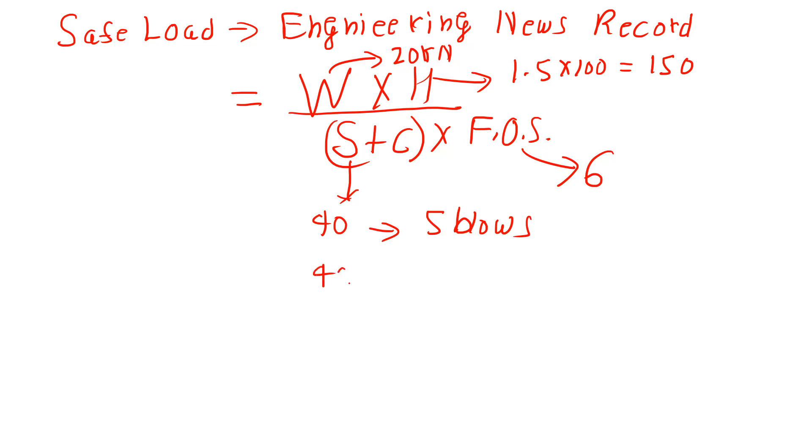Let us put all these values in this expression: 20 times 150 divided by (8 plus 2.5) times 6. If you solve this expression, it comes out to be 151.51 kilonewtons. This is the correct answer for this question. Thank you.